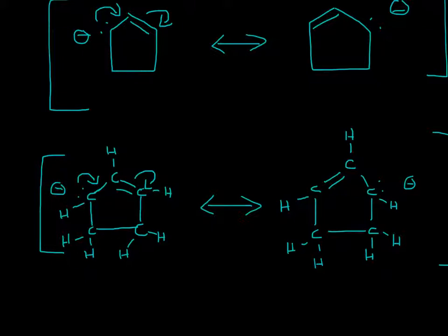So since carbon's in group four, you have that group number, four, minus whatever you count up. So one, two, three, four, five. Four minus five is negative one. So that's our negative charge here.